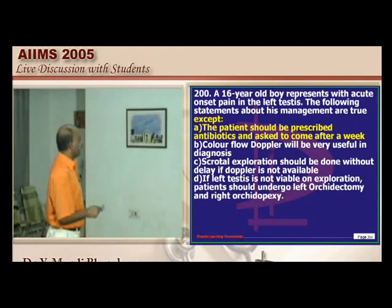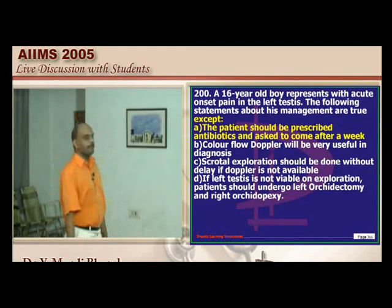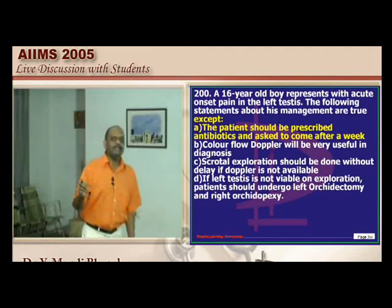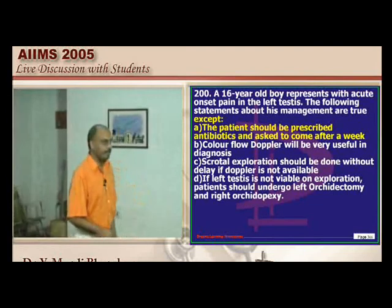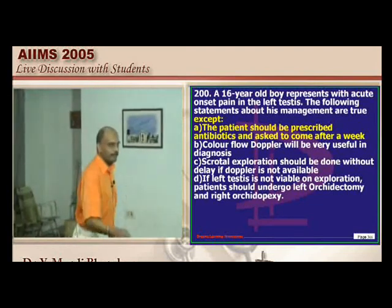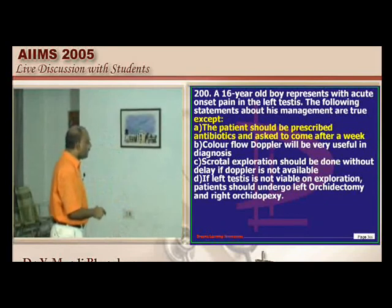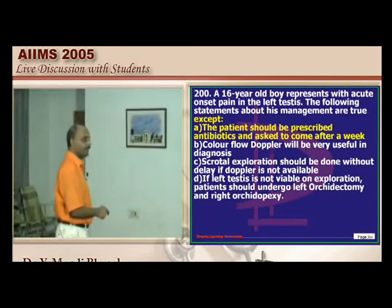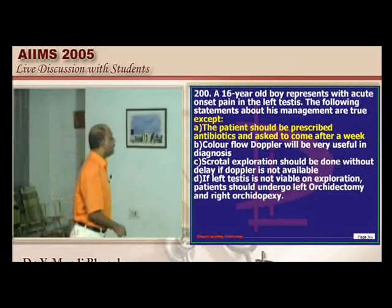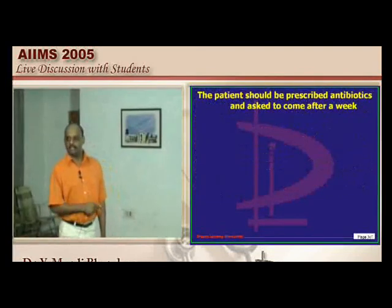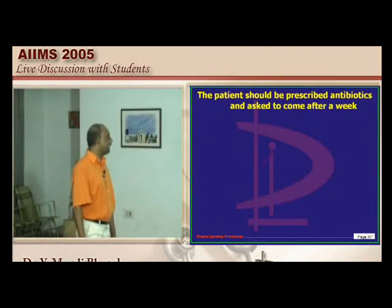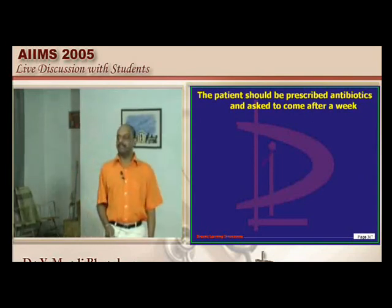A 16-year-old boy with acute onset left testicular pain — this means testicular torsion. Colour flow Doppler is needed to assess blood supply. Scrotal exploration must be done immediately without delay. If the left testis is not viable on exploration, orchidectomy is performed. Do not give antibiotics — delayed treatment leads to venous or dark infarction of the testis.